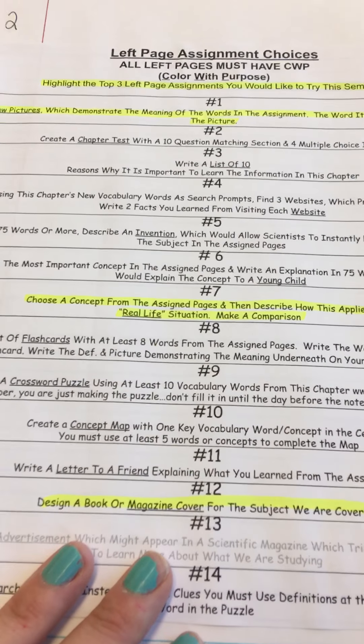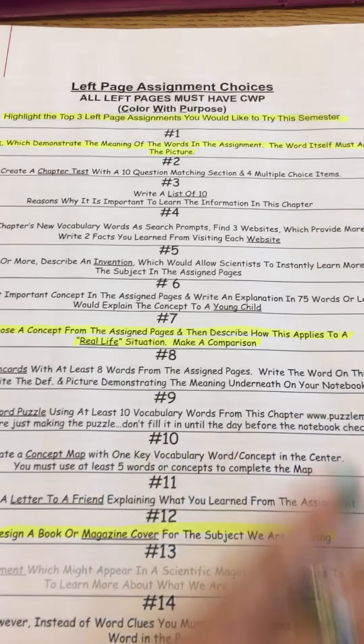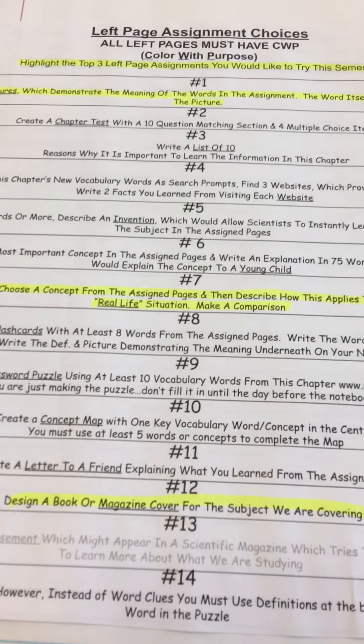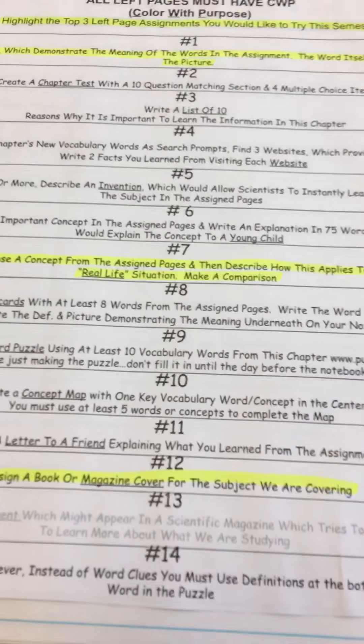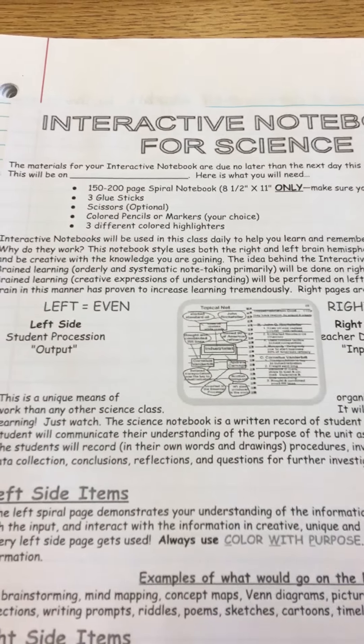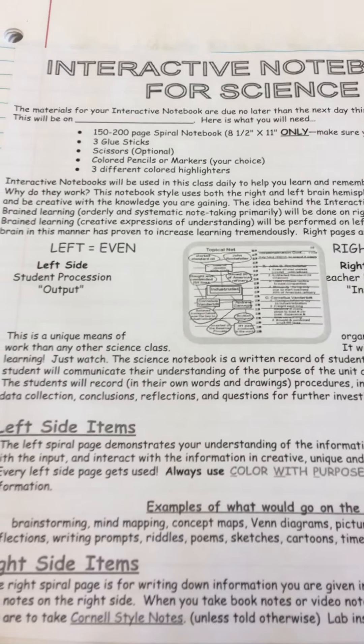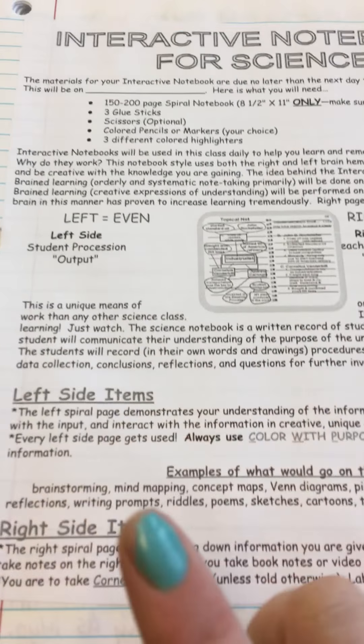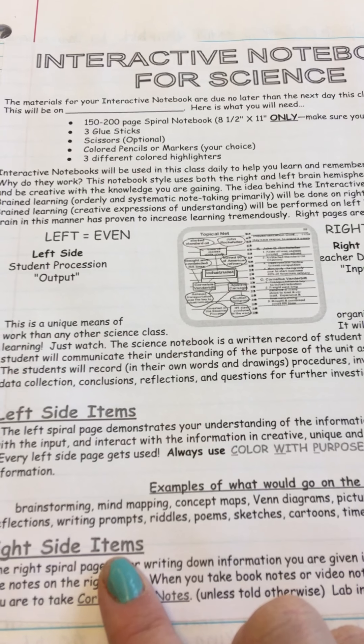Page number two is about the left page assignment choices that we will have for the year. You need to make sure that that is glued down there and that you highlight the top three choices that you want for the semester or for the year. Page three is background information about interactive notebooks — what should be on the left-hand side, what should be on the right-hand side, things along those lines.